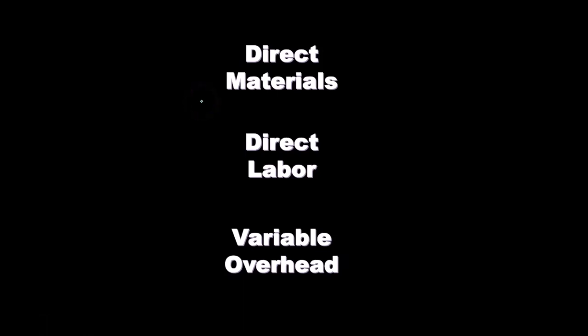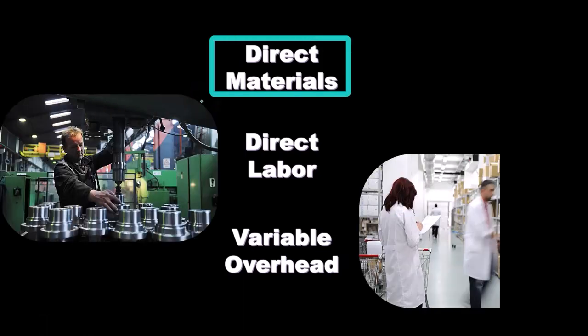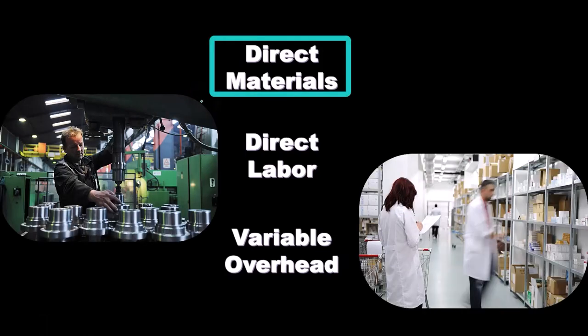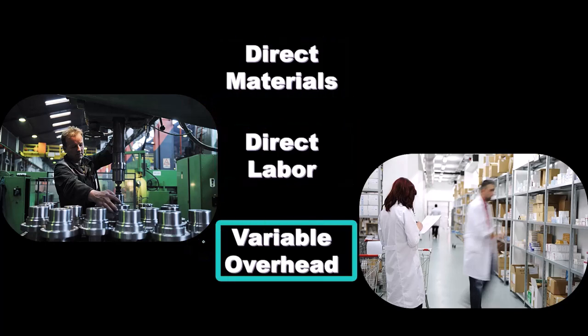When we think of the production of inventory, we have the component parts: the direct materials, the direct labor, and things like the variable overhead. The variable overhead is going to be the change in materials, labor, and overhead. We're concentrating here on the variable overhead.